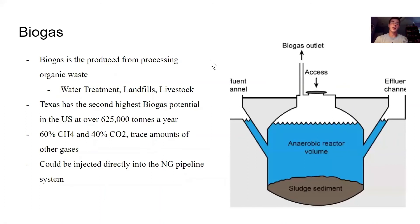Biogas is mainly carbon dioxide and methane, produced from the processing of organic waste — usually from water treatment, landfills, and livestock. Texas has the second highest potential for biogas in the U.S. at 625,000 tons per year. Once scrubbed of CO2, this methane could be injected directly into the natural gas pipeline system. Adding biogas production is great from a greenhouse gas standpoint because it sequesters methane and then emits CO2 when burned. CO2 has a warming factor 86 times less than methane, so installing this technology in the ERCOT region will drastically reduce its effect on climate change.